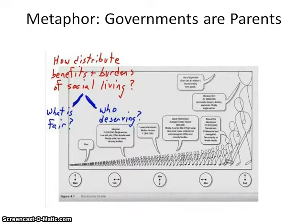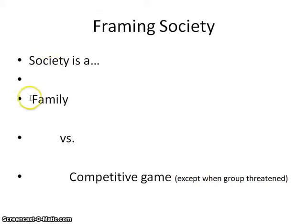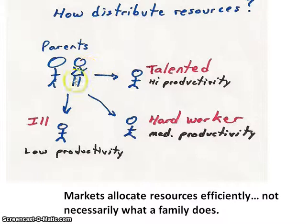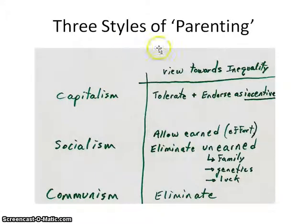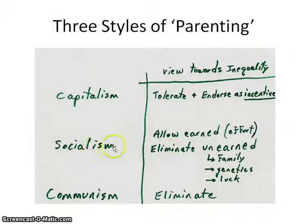So this was our original example of framing society. Is it a family? Is it a competitive game? Depending on how you frame that, you might be making different types of investments in different children or different segments of society. We can think of these different systems as metaphorically different styles of parenting, and they are related to how you might frame society. As you go down the list, you're looking at society more like a family. As you go up towards capitalism, you're seeing society more like a competitive game.